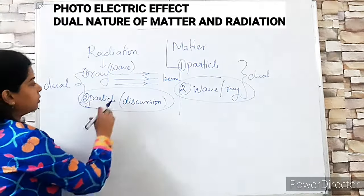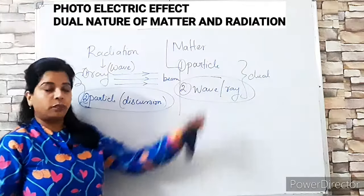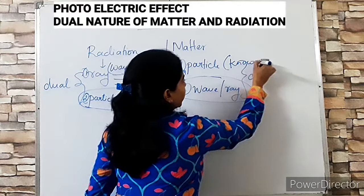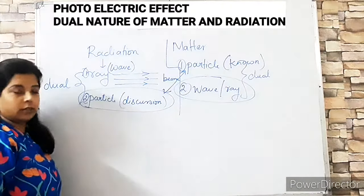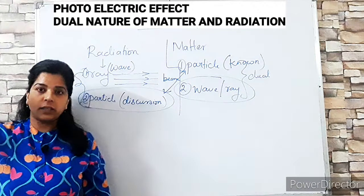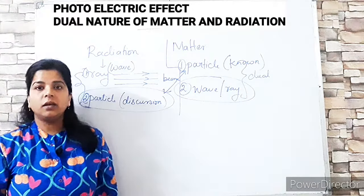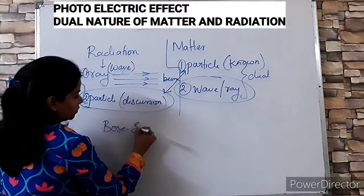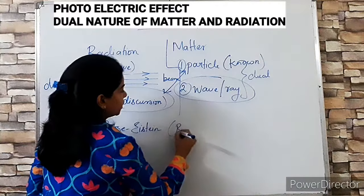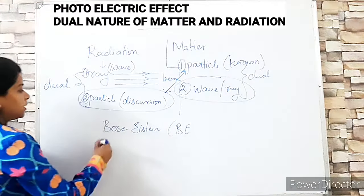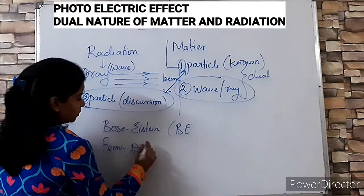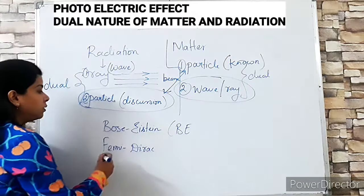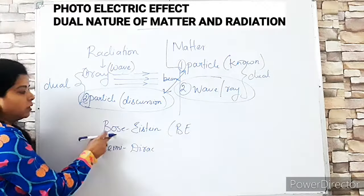Now let's discuss particle nature of radiation and particle nature of matter together. Two theories are relevant: Bose-Einstein theory and Fermi-Dirac (FD) theory. These were very famous theories. Bose was an Indian scientist — SN Bose Institute of Kolkata is a research institute named after him that works on physics and mathematics research. Bose-Einstein theory and Fermi-Dirac theory each categorize particles differently.